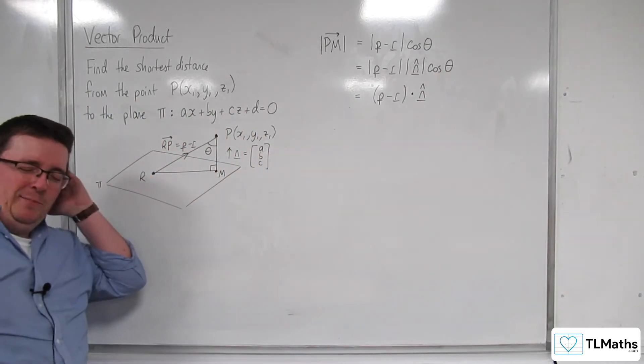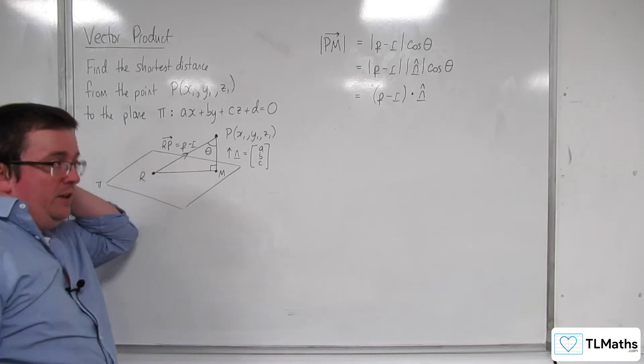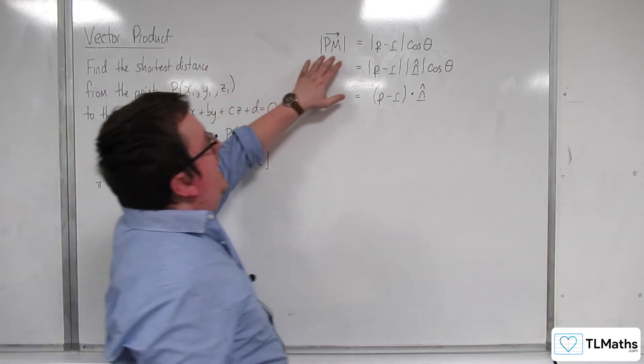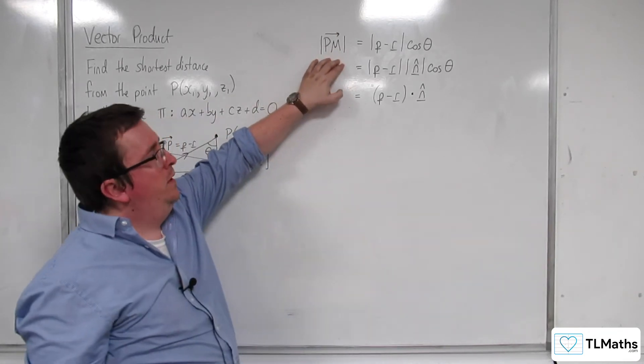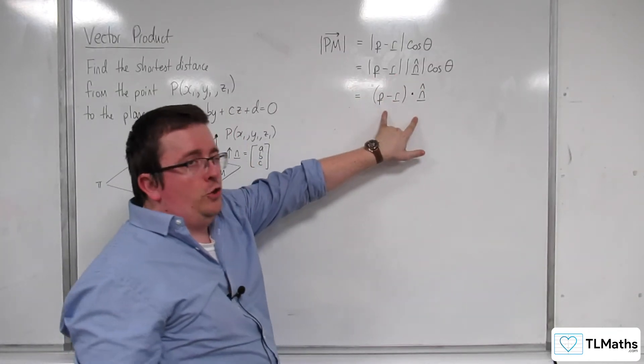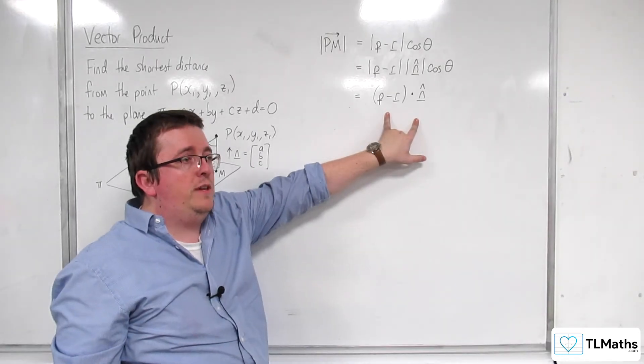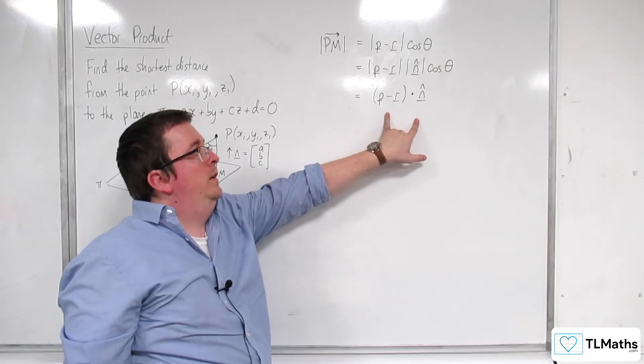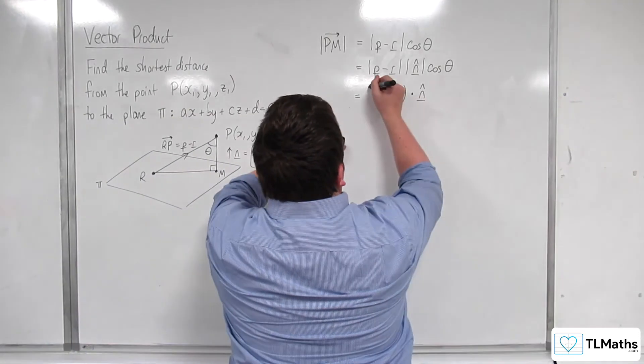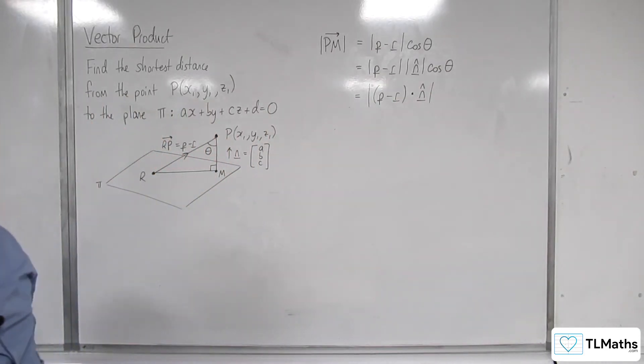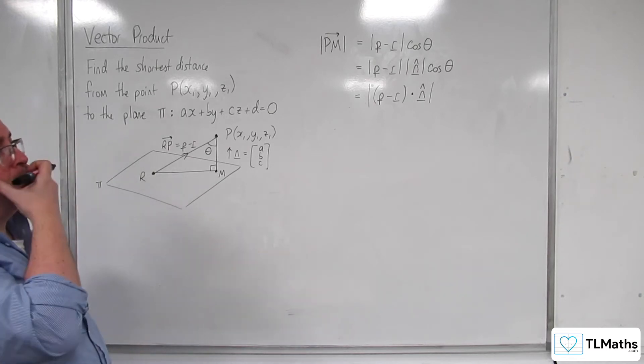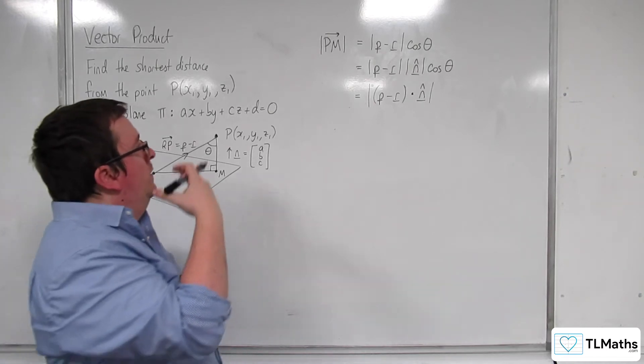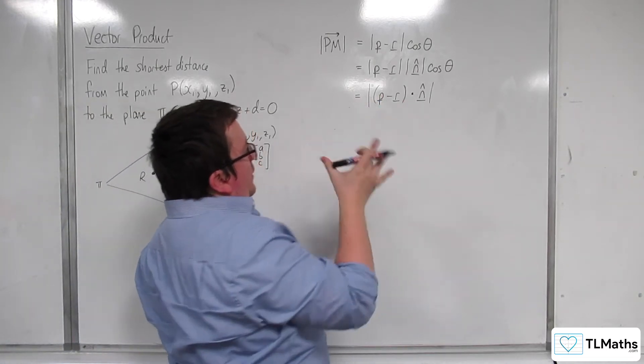Now we do need to be a little bit careful, because we are looking at the length of PM here, whereas this could give us a negative value. So to avoid that, we're going to have to pop modulus signs around it, so we need to keep that positive.